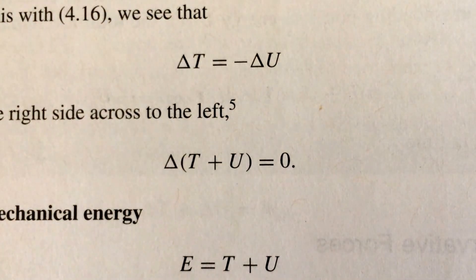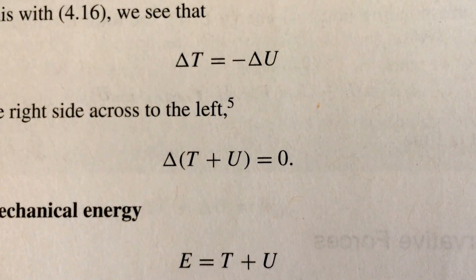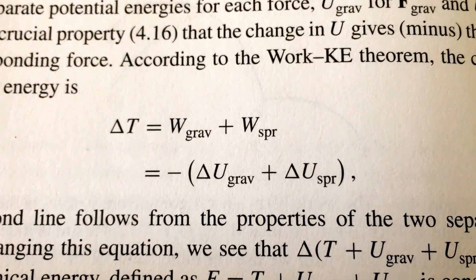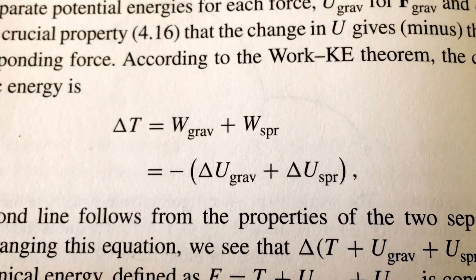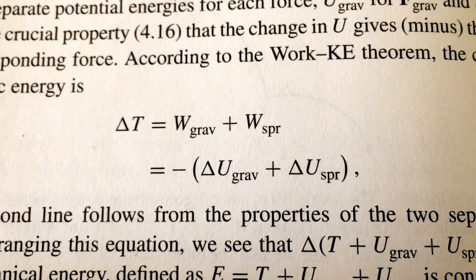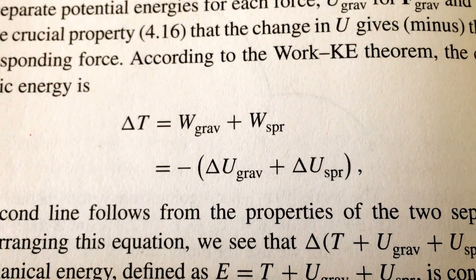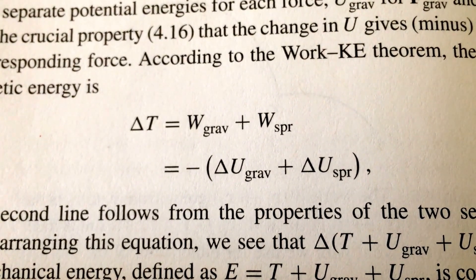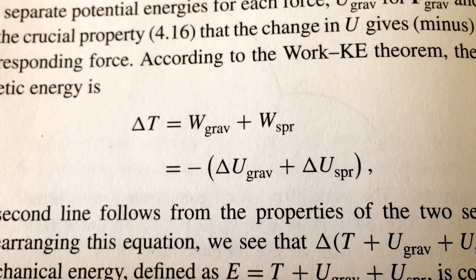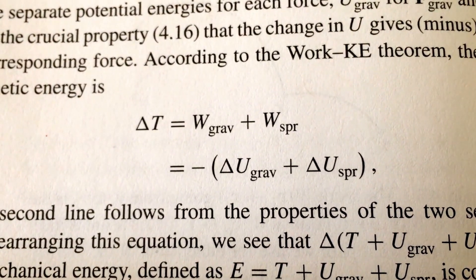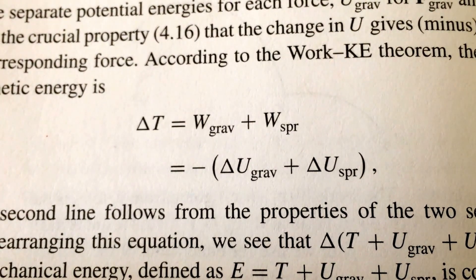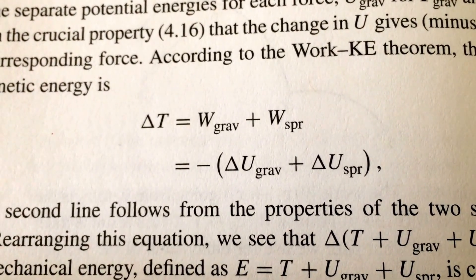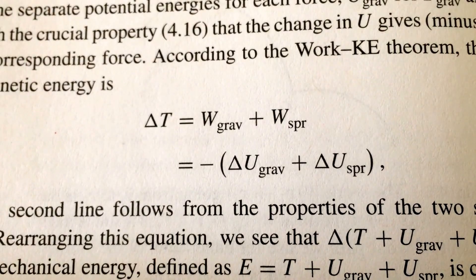That's why we call them conservative: they conserve the total energy of the system. For instance, if we have a mass on a spring suspended in a gravitational field, both the gravitational and spring forces have potential energies associated with them, and any change in the kinetic energy of that mass will be exactly equal to negative the change in the gravitational potential plus the change in the spring potential.